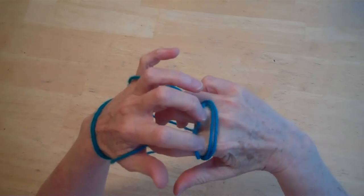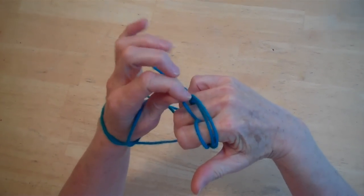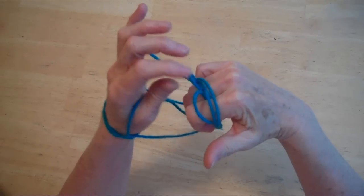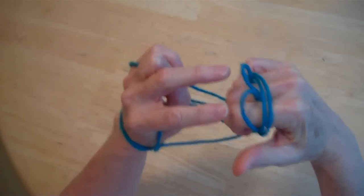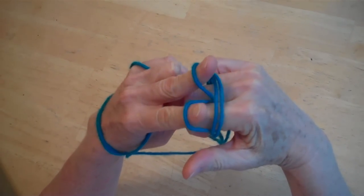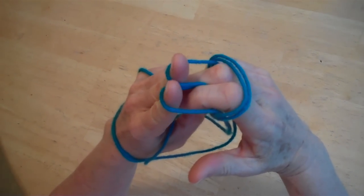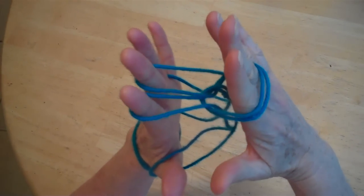You're going to take these two loops here, lift them up a little bit to make room for your pointer and your middle finger on your left hand. You're going to go in there, pull those off, and keep that on there.